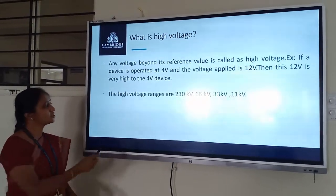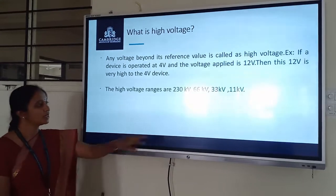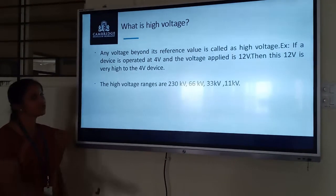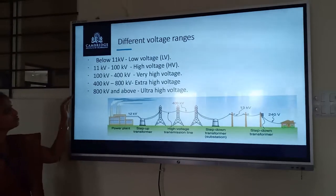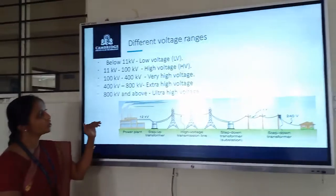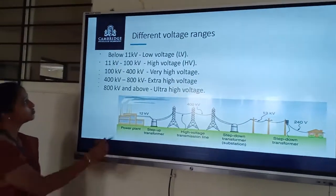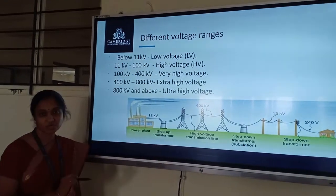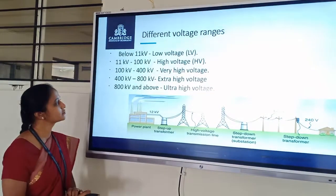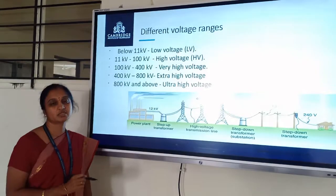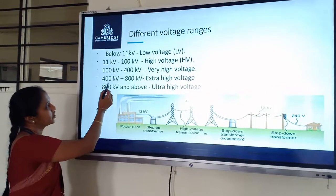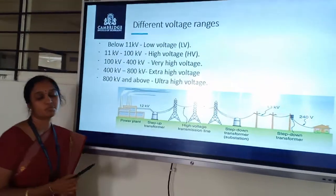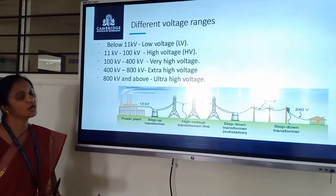In this subject there are different ranges of high voltages like 11 kV, 33 kV, 66 kV, and 230 kV. We classify voltages as: low voltage (below 11 kV), high voltage (11 kV to 100 kV), very high voltage (100 kV to 400 kV), extra high voltage (400 kV to 800 kV), and ultra high voltage (beyond 800 kV).